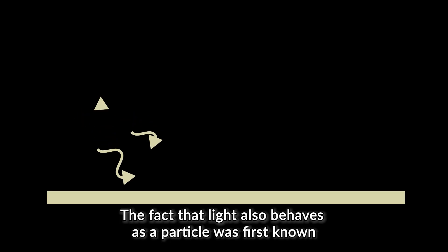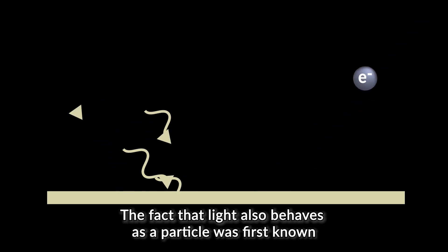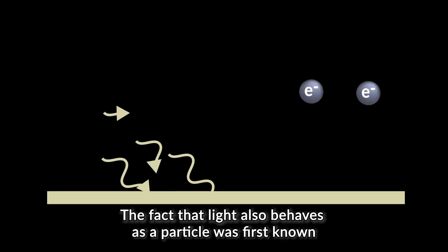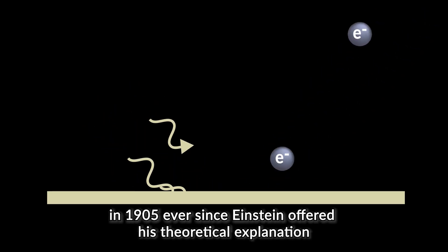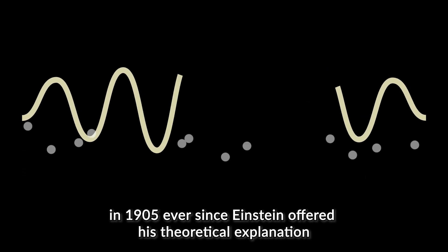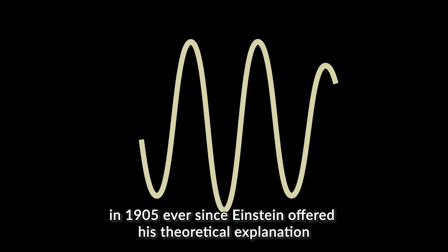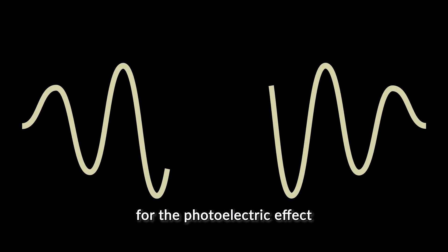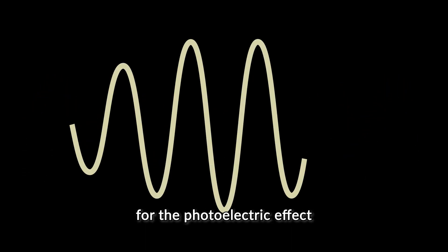The fact that light also behaves as a particle was first known in 1905, ever since Einstein offered his theoretical explanation for the photoelectric effect.